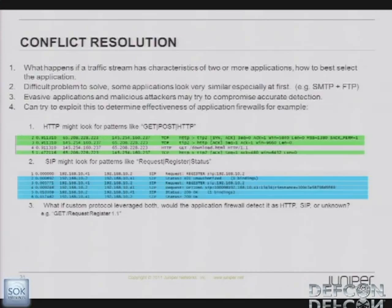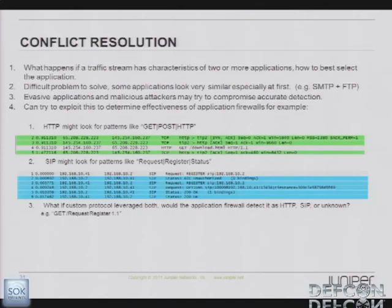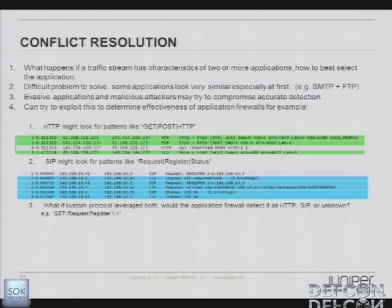Another interesting thing we've noticed is called conflict resolution. This is something that an attacker might be able to leverage. What happens if you have an application that matches more than one application signature? SMTP and FTP are very similar — they could potentially match each other's signatures. How do you resolve conflicts in application detection? That could potentially be used to an attacker's benefit. It'll vary by implementation — a lot will just fall back on the port and say 'if we detected this pattern and we expect it on this default port, it must be HTTP.' Some will list it as an unknown application; others might just pick one of the two in order of precedence. Conflict resolution is potentially something that could be leveraged for both good and bad.